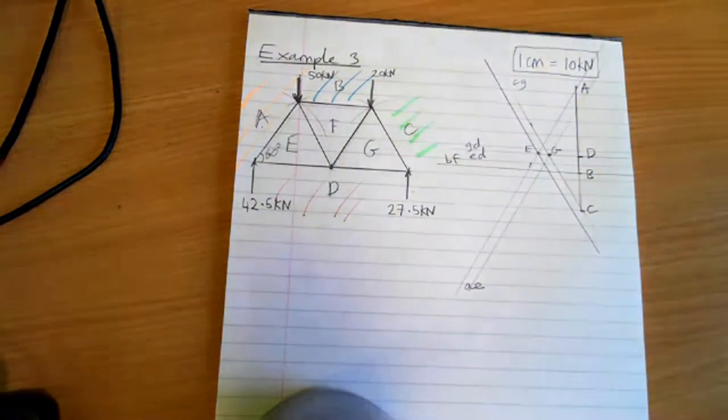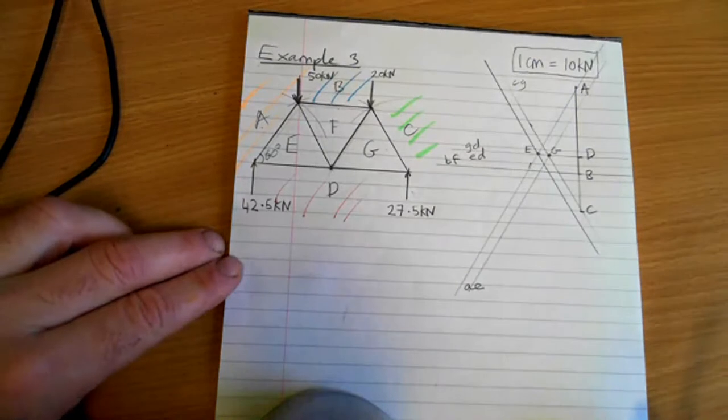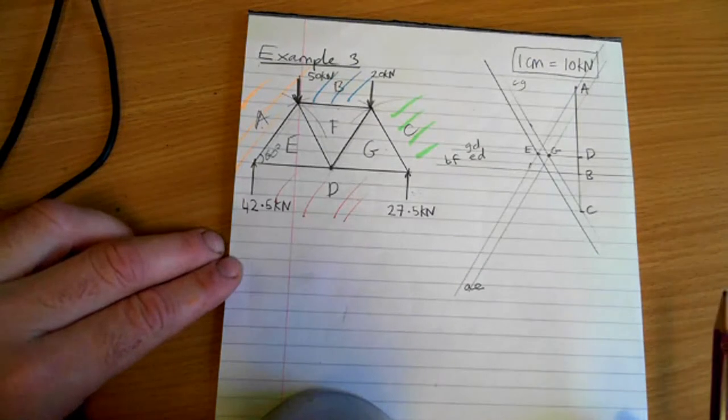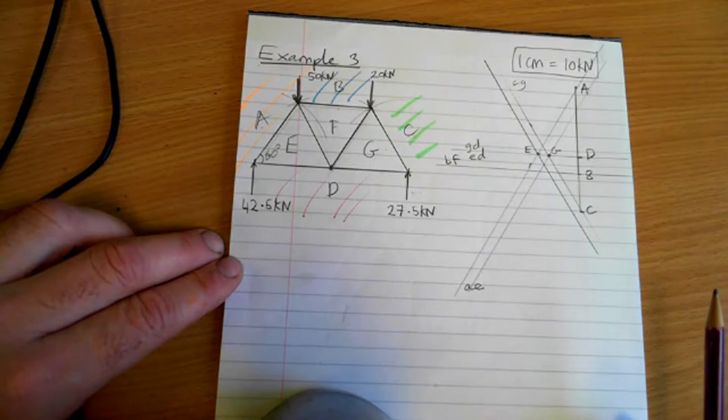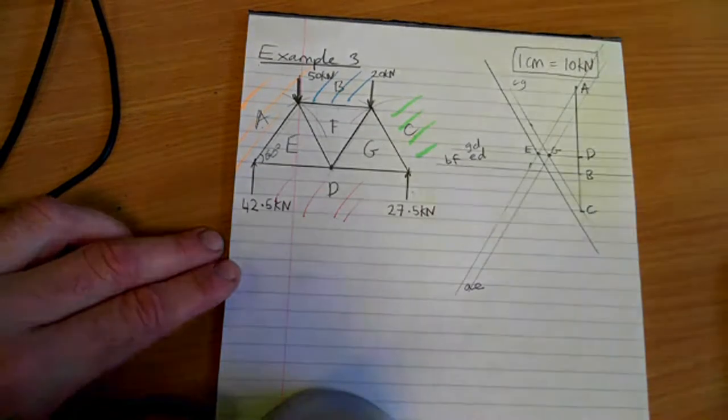Right, we now have completed the diagram. So the next bit is we're going to basically work out the magnitude, which means the sizes of these forces. For that I'm going to use some highlighter pens.